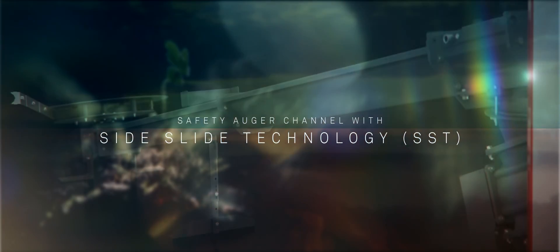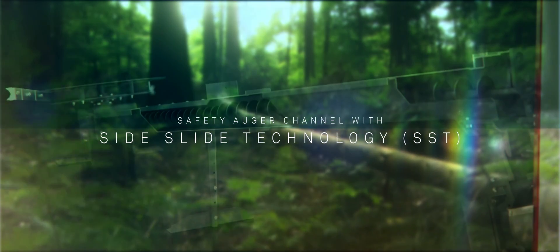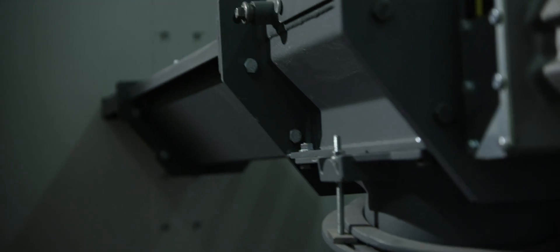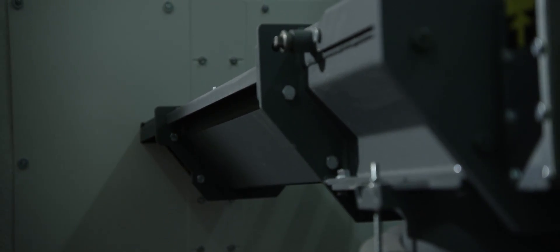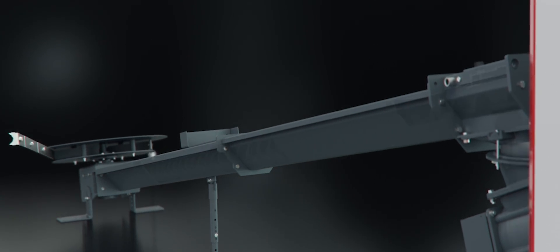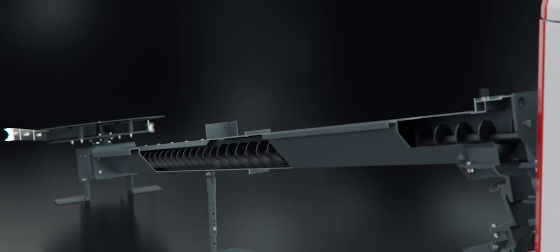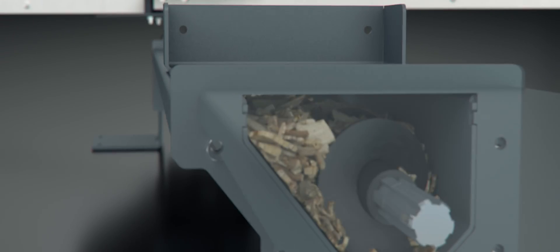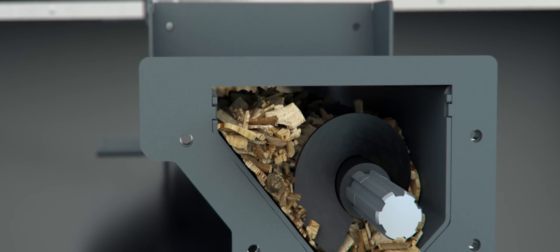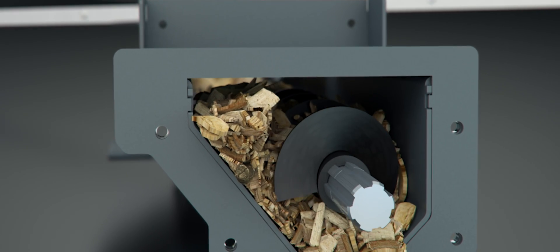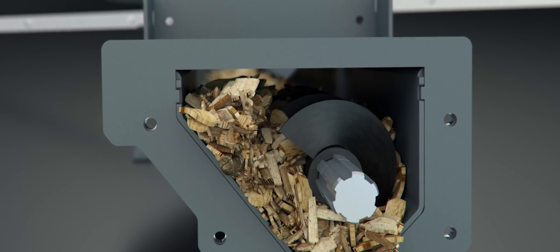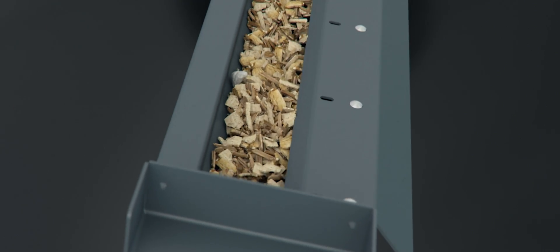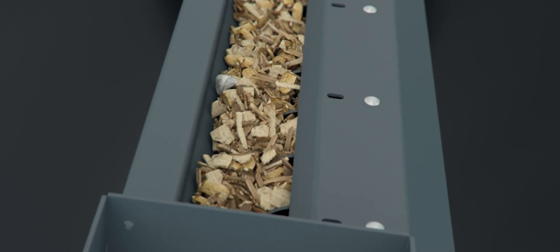Together, it's the details that count. We have developed a unique safety auger channel for the Puro win, and it features side-slide technology. The enlarged asymmetric channel means that up to 60% of the wood chip is transported to the side of the auger. Foreign bodies and large pieces of wood can cause virtually no harm.